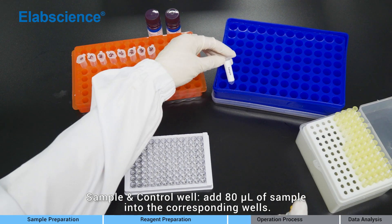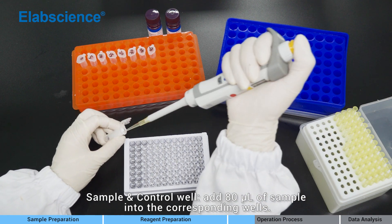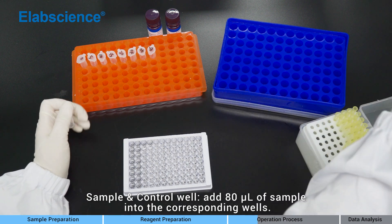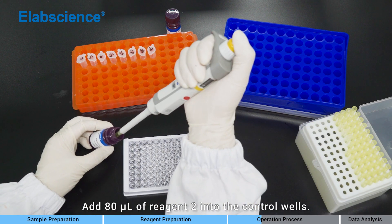Sample and control well: Add 80 microliters of sample into the corresponding wells. Add 80 microliters of reagent 2 into the control wells.